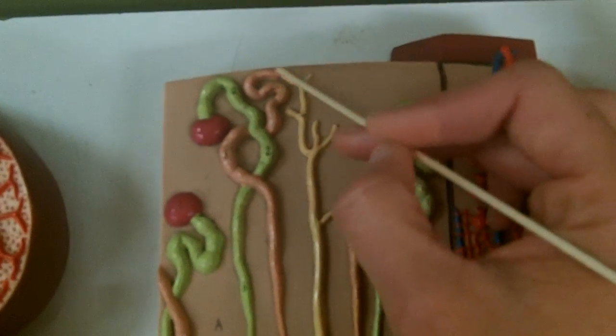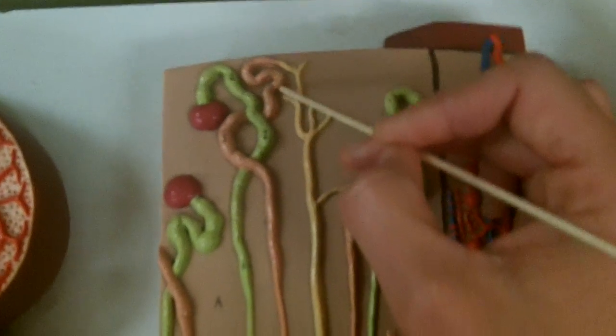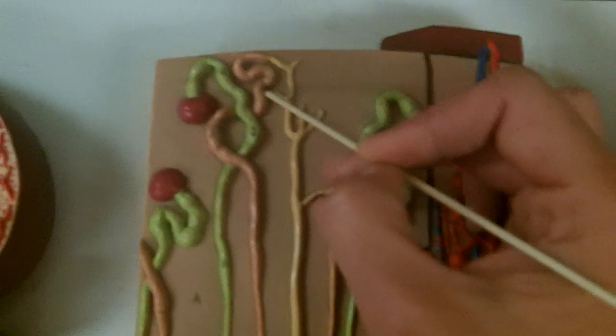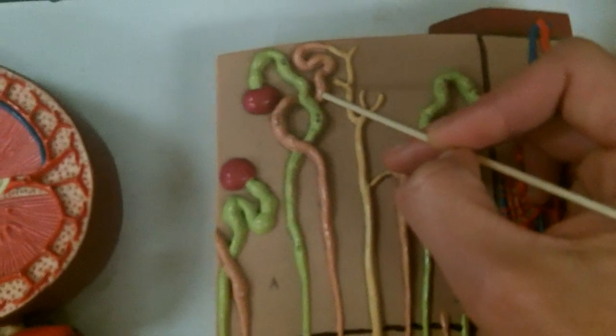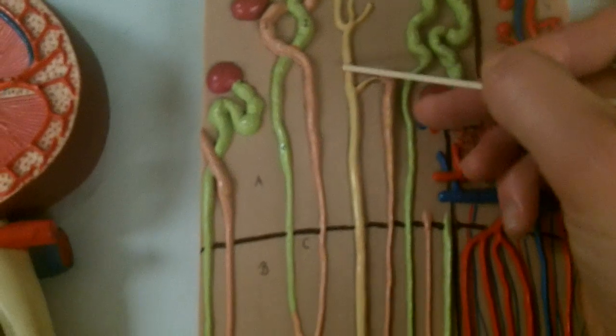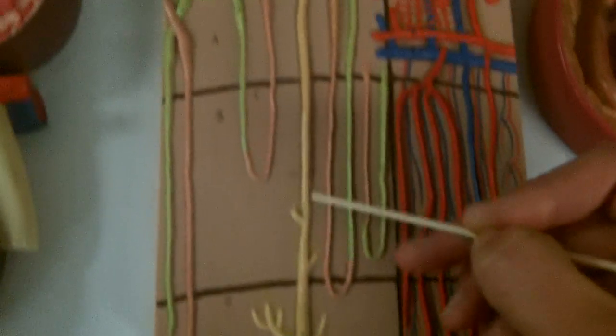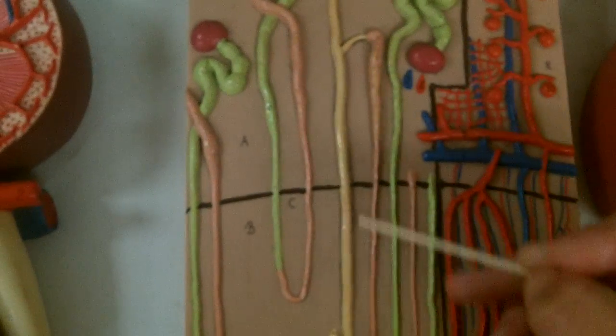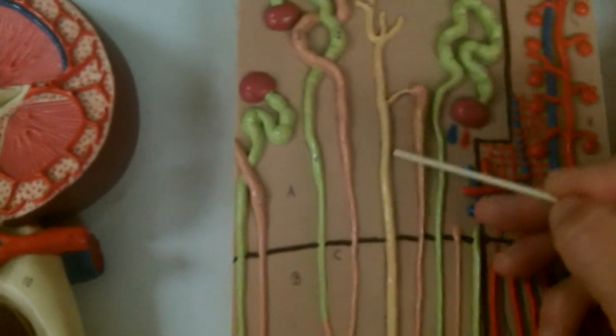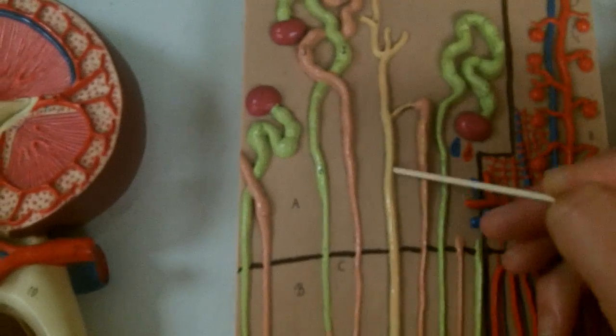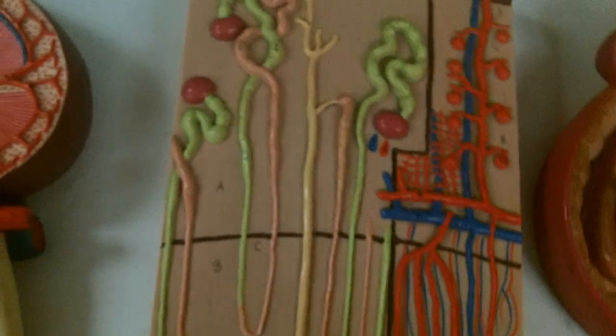And then continuing on over here would be the late distal convoluted tubule and I'll remind you that this will be the target for aldosterone. And then we are going to have collecting ducts and medullary ducts and papillary ducts, and for my purpose, my lecture exam, I want you to remember that it's the medullary duct cells that are targeted for ADH.